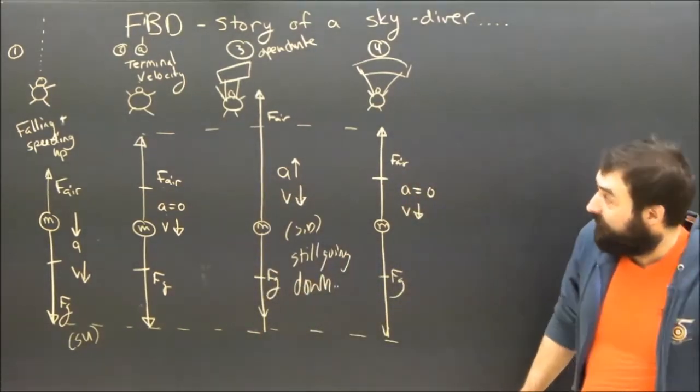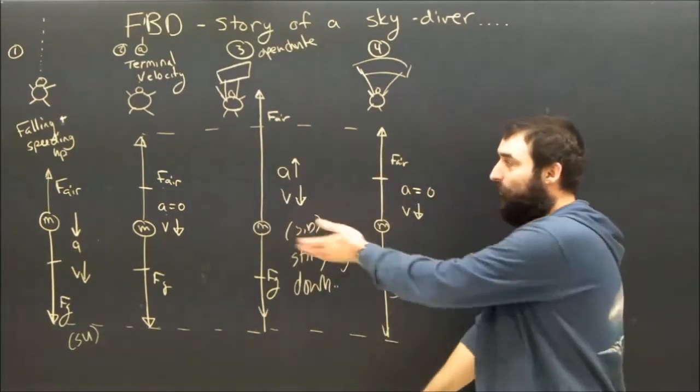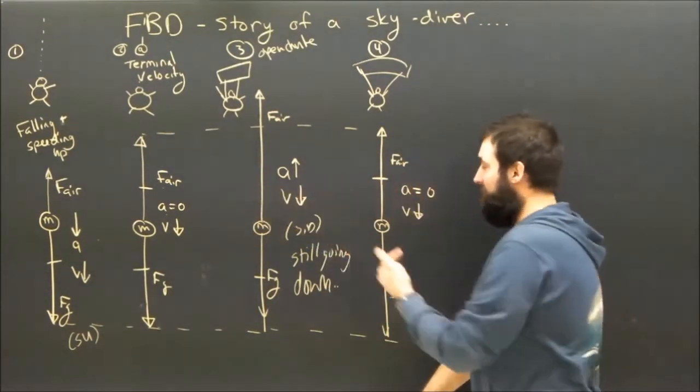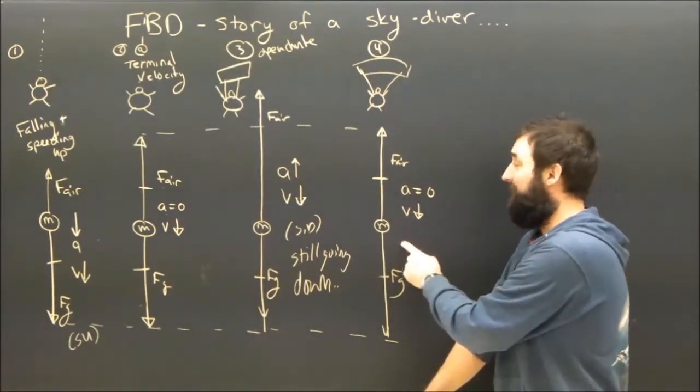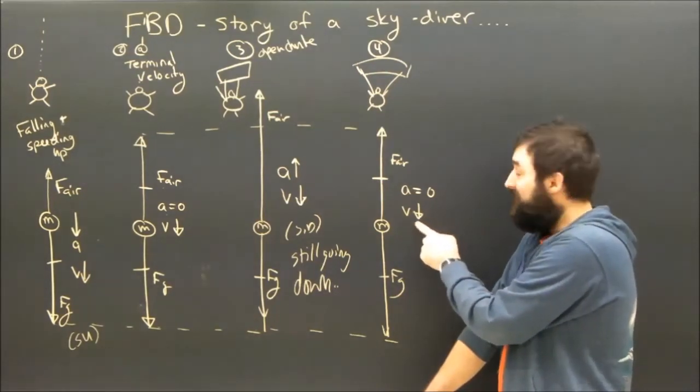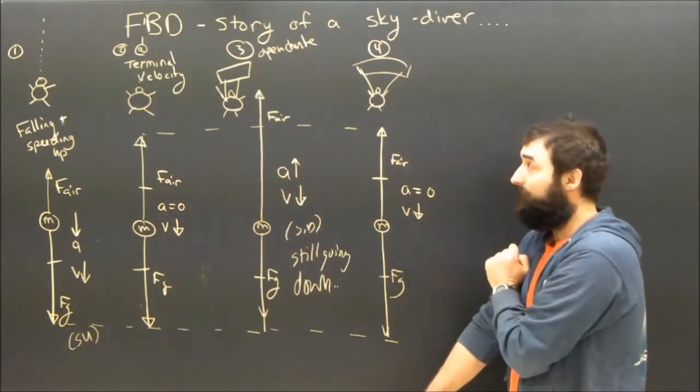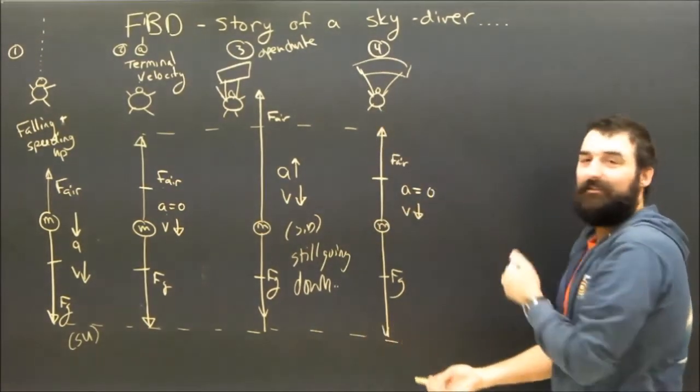But what's the fundamental difference between two and four? There is a fundamental difference. Once, of course, he has a parachute open. Once, he doesn't. But the forces on him are the same. And his accelerations are the same. What's the actual difference? The difference is the speed. In diagram four, his terminal velocity, if you could call it that, his speed that he's reached, is way, way smaller.